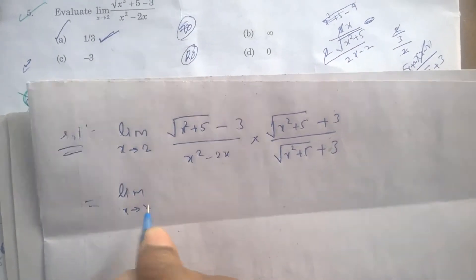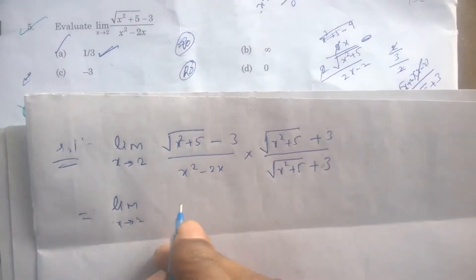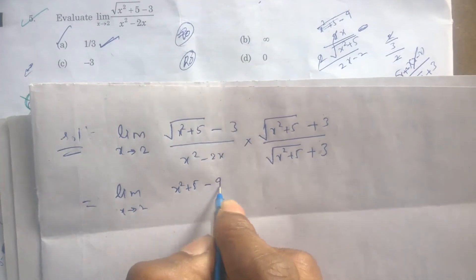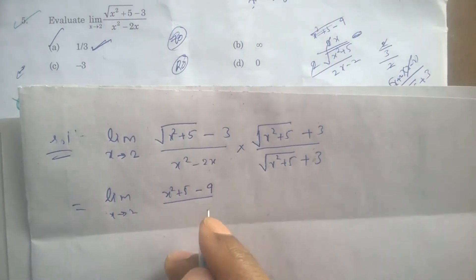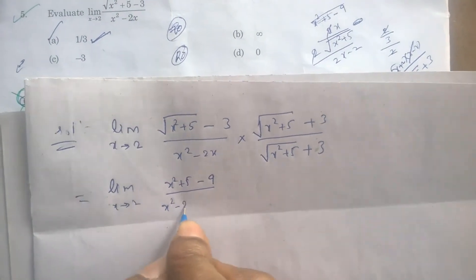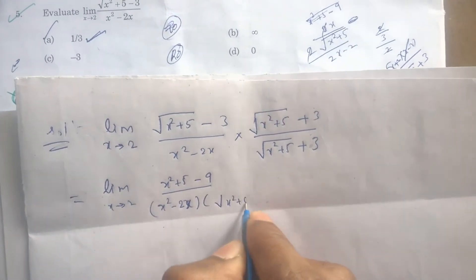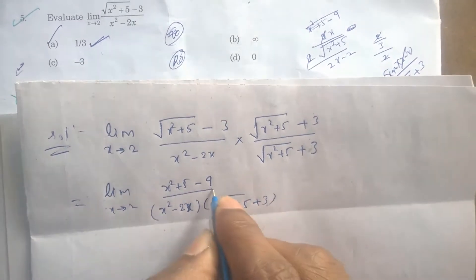Now, by solving this limit x tends to 2, this is a minus b into a plus b formula. a² means x²+5 minus b² means 3² minus 9, and the denominator is x²-2x into √(x²+5) + 3.